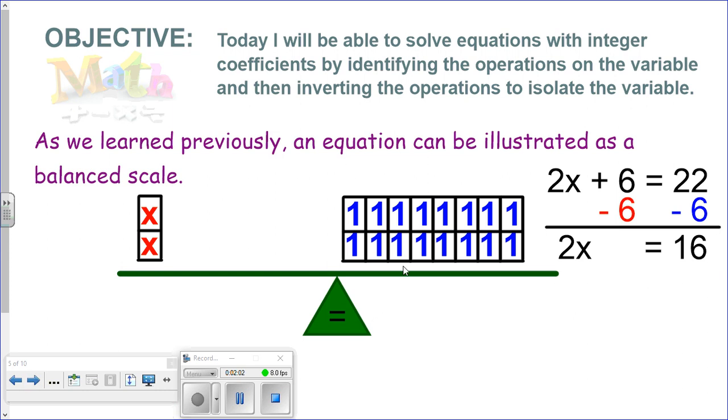If we took away 6 on one side, we take away 6 on the other. The 6 cancels out, and we're left with just 2x. And the other side, 22 minus 6, is going to give us 16.